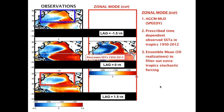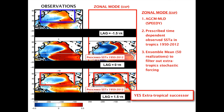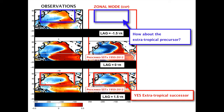Performing the same lead-lag analysis: at lag zero, the tropical pattern is prescribed so it is identical to observations, and the extratropical pattern is driven by teleconnections excited by the tropics — very similar to observations. The future evolution also captures this extratropical successor well. However, when we look at the extratropical precursor, we find there is none. So essentially the zonal mode alone cannot drive this extratropical decadal precursor that appears to be important in the observations. The question then becomes: is this precursor controlled by meridional mode dynamics?